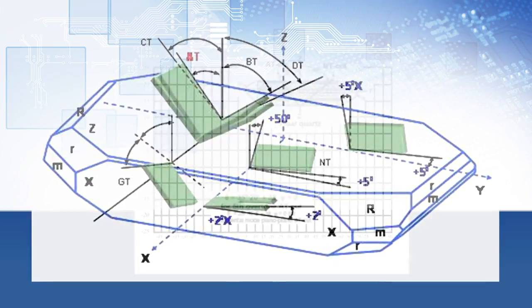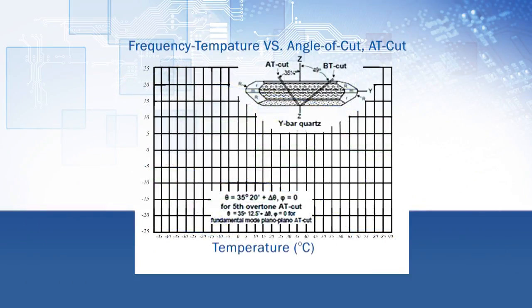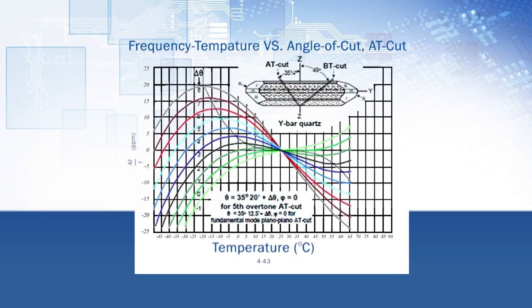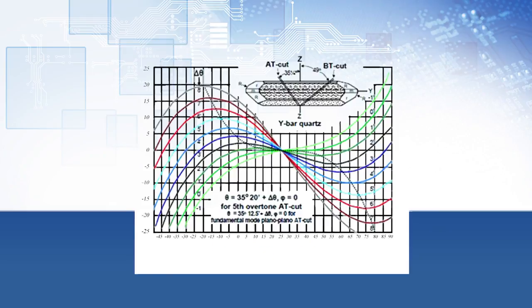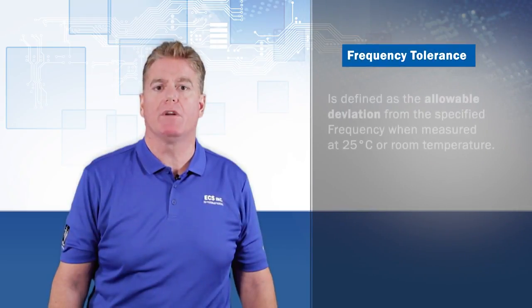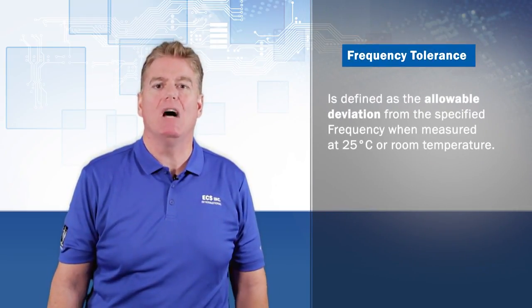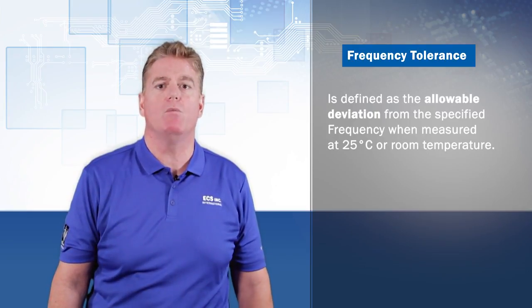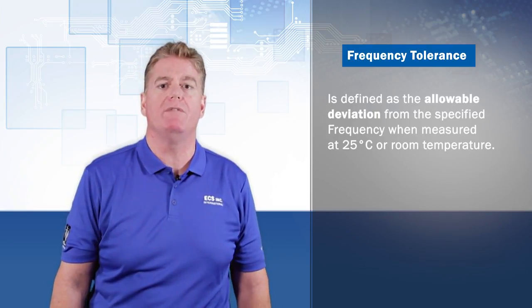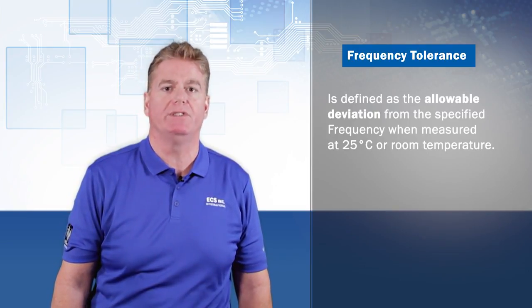For some of today's most stringent applications that require high stability and wide temperature ranges, we would use an AT Cut crystal blank. The frequency tolerance of a crystal is defined as the allowable deviation from the specified frequency when measured at 25 degrees Celsius, or room temperature.